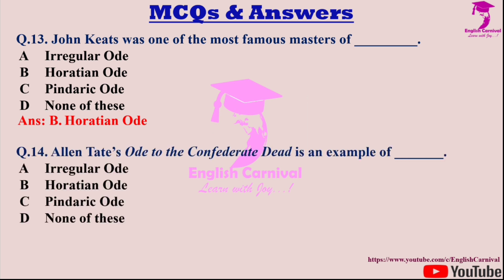Question fourteen: Alan Tate's 'Ode to the Confederate Dead' is an example of — dash. Options are A: Irregular Ode; B: Horatian Ode; C: Pindaric Ode; and D: None of these. The correct answer is B — the Horatian Ode.